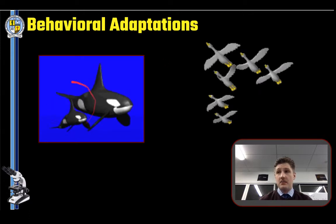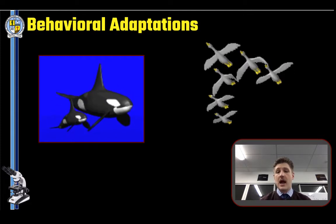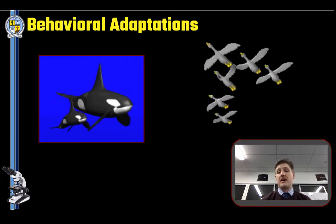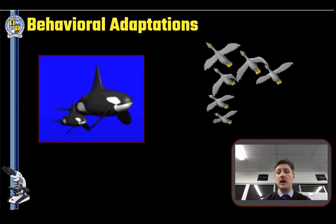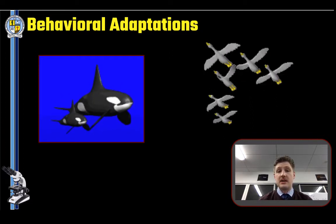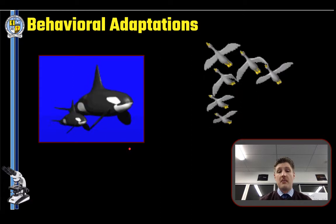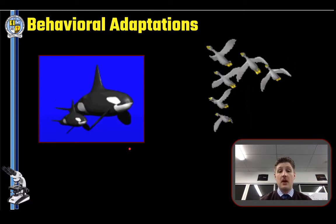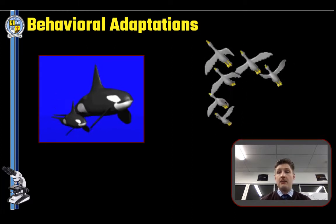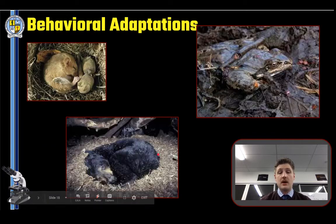We see migratory patterns in orcas in New Zealand harbours, as well as in birds and whales and sea life moving to better climates — better places to give birth or find food. Migration is the seasonal or periodic movement of animals in response to changes in climate or food availability. Humpback whales go to the tropics to raise their young, and even monarch butterflies trek across the world to reproduce.